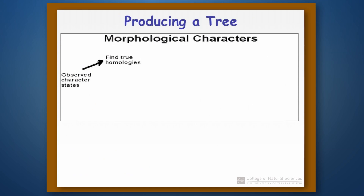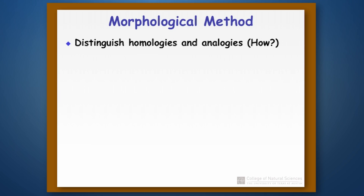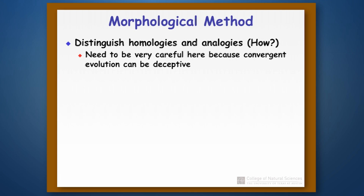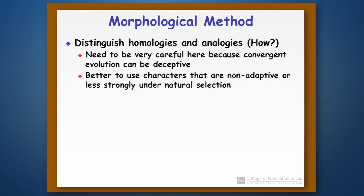Once we've gathered all of our characters, we want to make sure we're working with homologies, because only homologies are useful in reconstruction — not analogies. To distinguish homologies from analogies, we have to be careful because convergent evolution can be really deceptive. It's better to use characters that are non-adaptive or less strongly under natural selection, because where natural selection acts strongly, convergent evolution is a bigger problem.